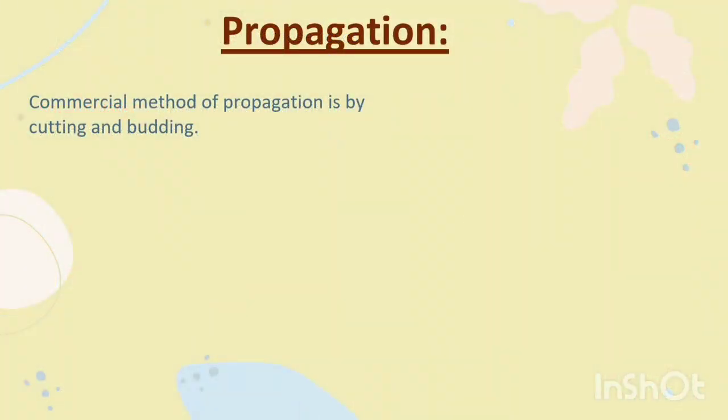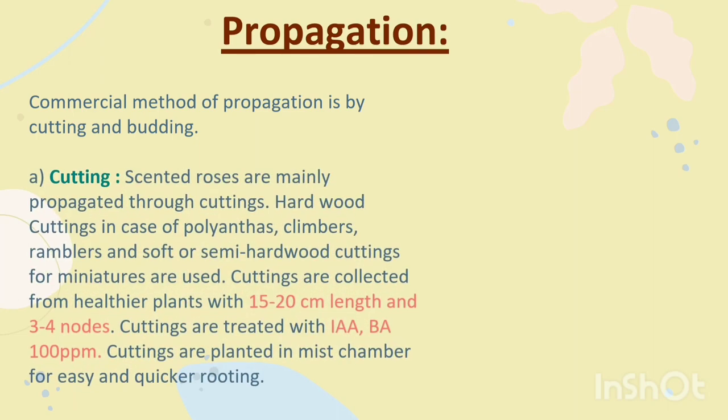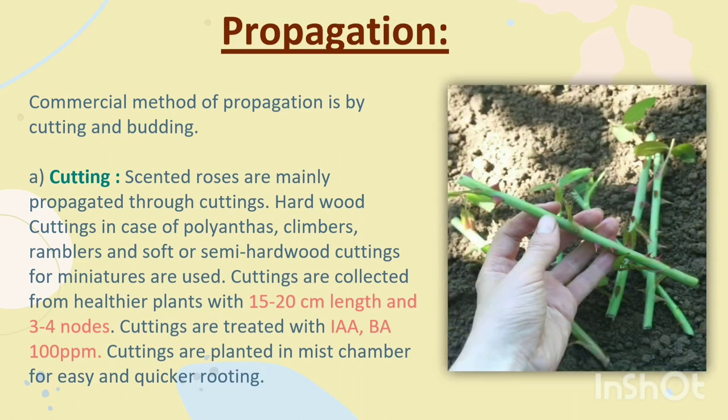Propagation. Commercial methods of propagation are by cutting and budding. Cutting: Scented roses are mainly propagated through cuttings. Hardwood cuttings are used in case of polyanthas, climbers and ramblers, while soft or semi-hardwood cuttings are used for miniatures. Cuttings are collected from healthier plants with 15–20 cm length and 3–4 nodes. Cuttings are treated with IBA at 100 ppm and planted in a mist chamber for easy and quicker rooting.